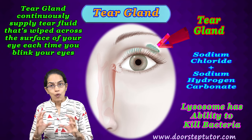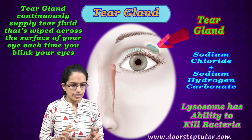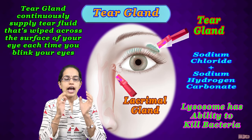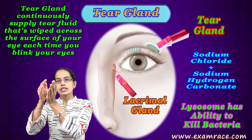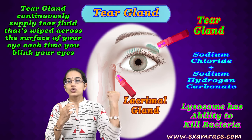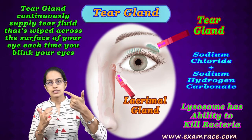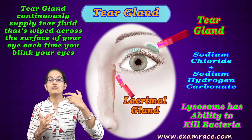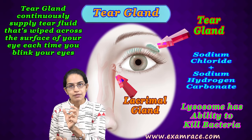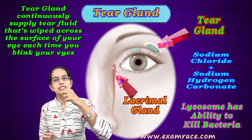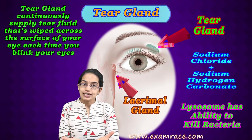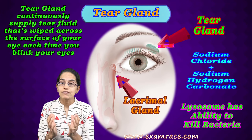Finally, we have the lacrimal glands towards the inner side of the eye, where the draining of tear fluid takes place into the nasal cavity. This explains the close connection between your eyes and your nose, especially when you cry. The lacrimal gland drains tears ultimately into your nasal cavity.